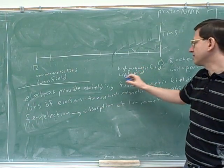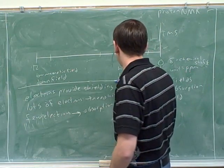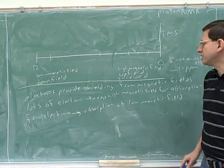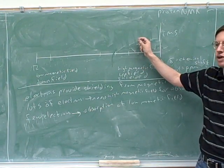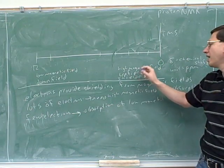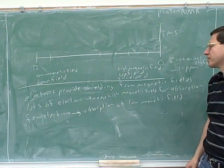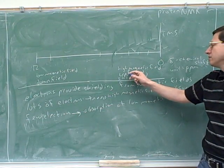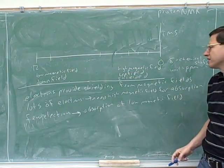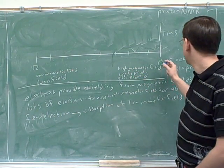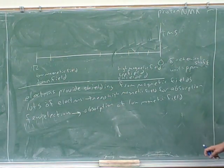Another name for this region besides 'upfield' is the shielded region. Compounds that are well shielded by electrons absorb on the right-hand side — upfield, high magnetic field, low chemical shift. Remember that high field corresponds to low chemical shift, which is a little confusing. The magnetic field increases to the right, but the convention is that chemical shift increases to the left.